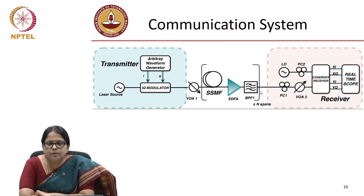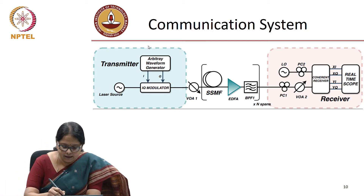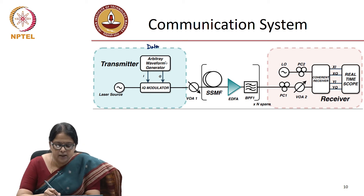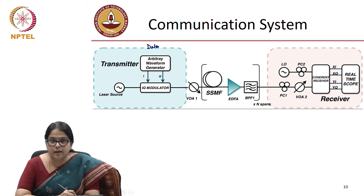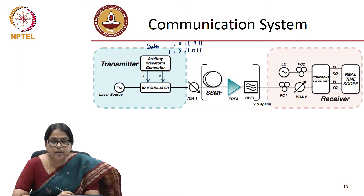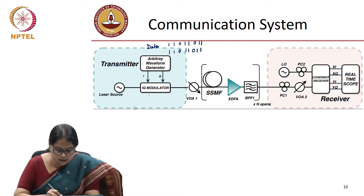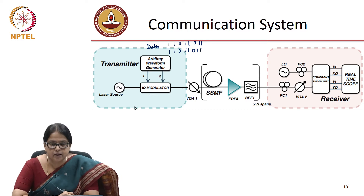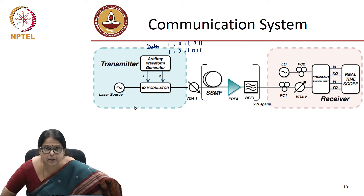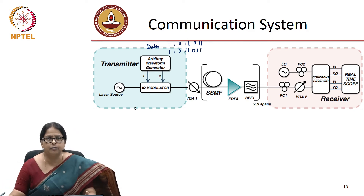This is how our transmission system looks. You have the data to be encoded, which in a laboratory environment gets generated in an arbitrary wave generator. This is the block diagram from our laboratory itself. The data encoded in bits — like 1, 1, 0, 1, 1, etc. — is loaded into the I and Q inputs of an IQ modulator. You have already seen the functionalities of an IQ modulator, and the IQ modulator is driven by the optical transmitter, which is a laser diode of narrow linewidth.